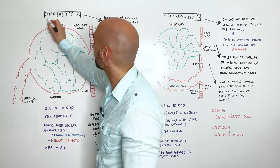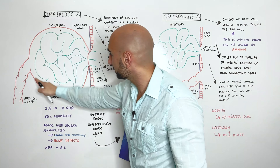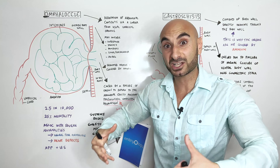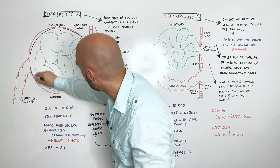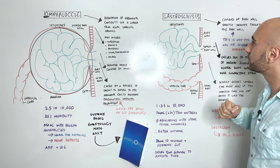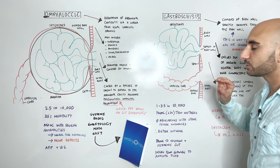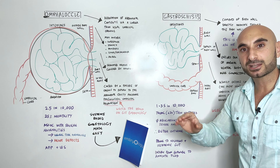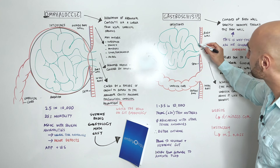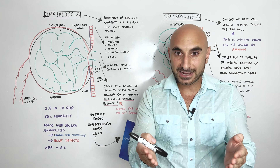Omphalocele starts with O. The intestines are contained within this big ball that looks like an O — O for omphalocele. Gastroschisis starts with G. Its herniated contents are not associated with or not herniating from the umbilical cord — and so G. For a better understanding, keep watching.